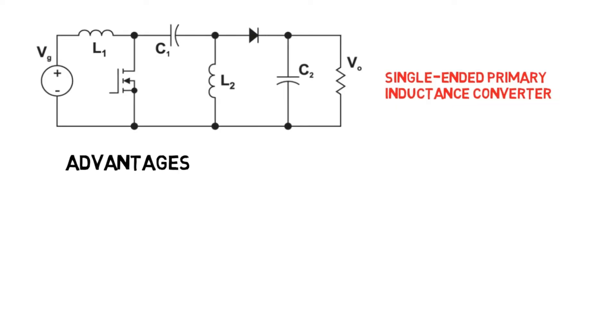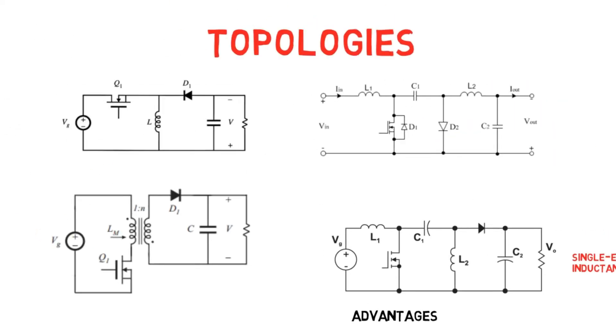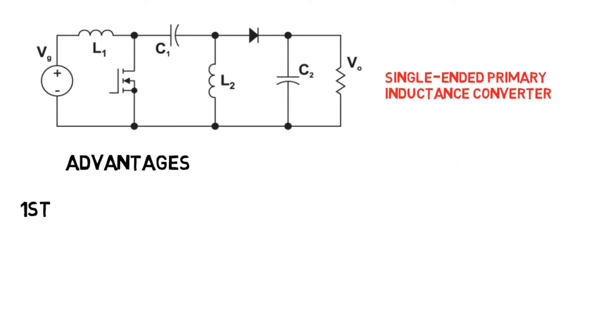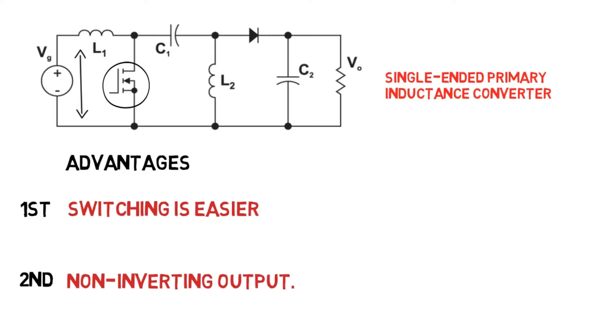Well, there are several advantages of this converter over traditional buck-boost converters and flyback converters. First is the active switch, that is, the control switch is in parallel with the load, so switching this component becomes easier. Second, unlike buck-boost converter, it gives non-inverting output.